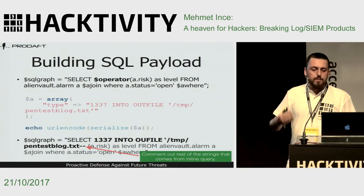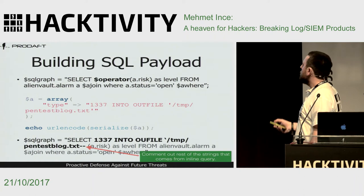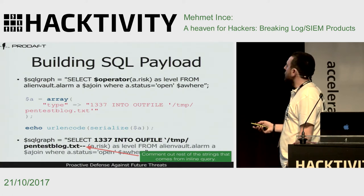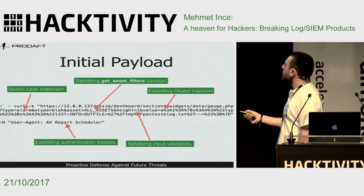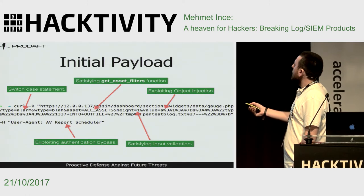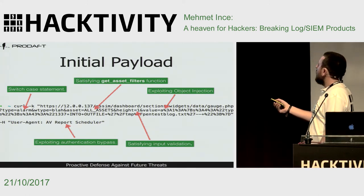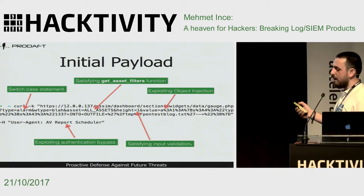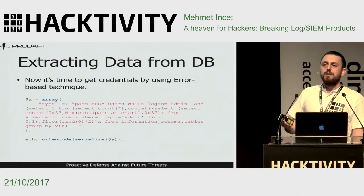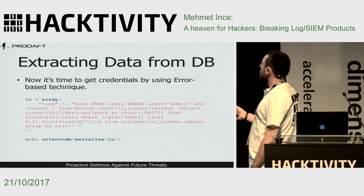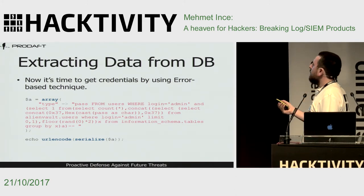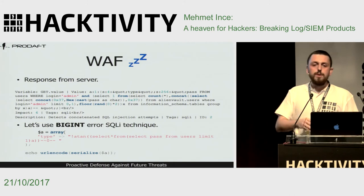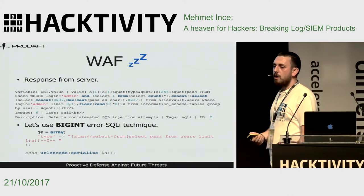So we have SQL injection and authentication bypass. Let's continue exploiting the SQL injection. This is our initial payload — we comment out the rest of the queries. Our type is 'alarm', we put all_assets in the assets variable, height equal to 1 due to input validation, and our payload with the magical user agent. We use an error-based technique, but when we send the payload, the product's built-in web application firewall detects it and blocks execution.